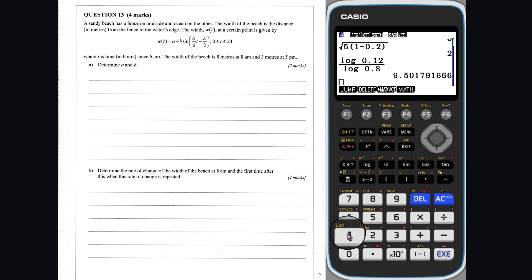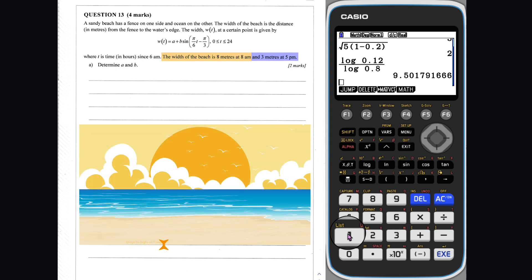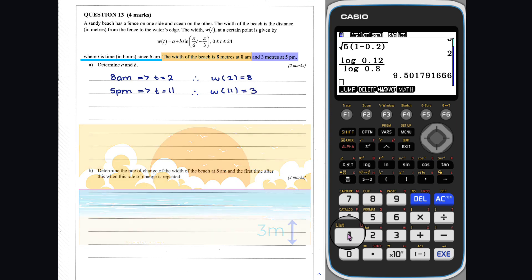Question 13 Part A: We are given two key pieces of information to help us solve for A and B. The width of the beach is 8m at 8am, which is 2 hours after 6am. The width of the beach is 3m at 5pm, which is 11 hours after 6am. Thus, subbing the values into our equation of W, we get these equations.